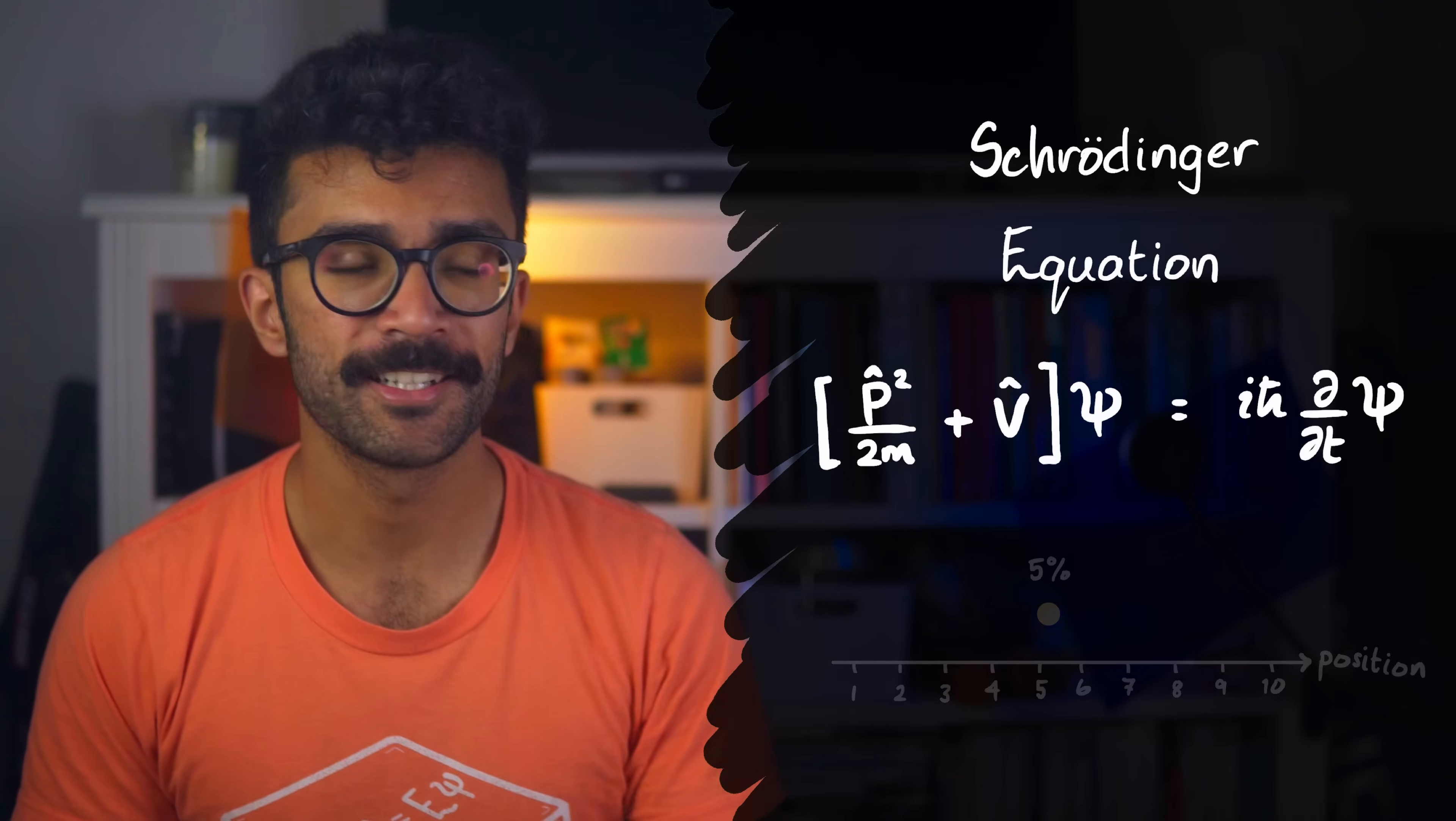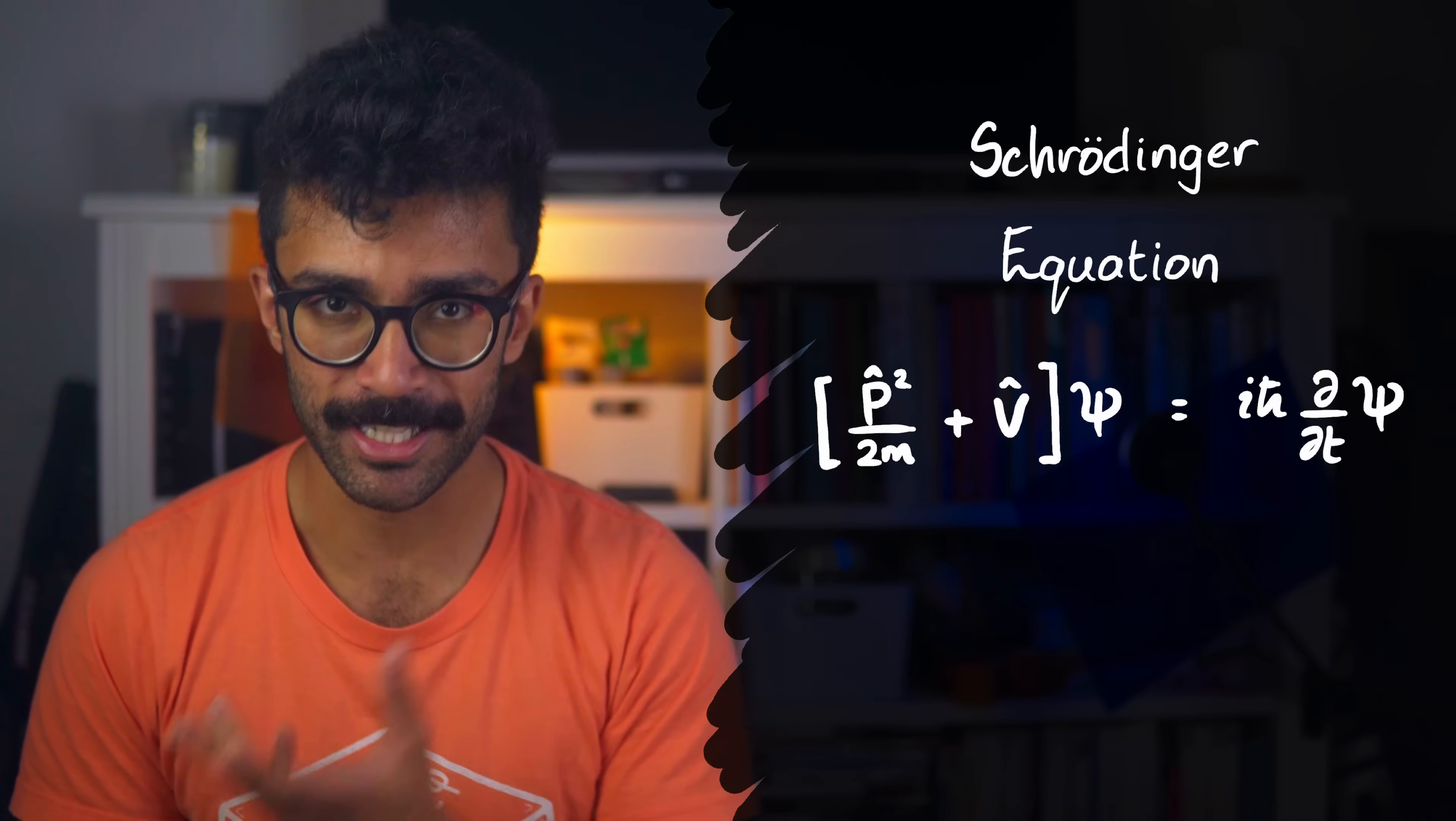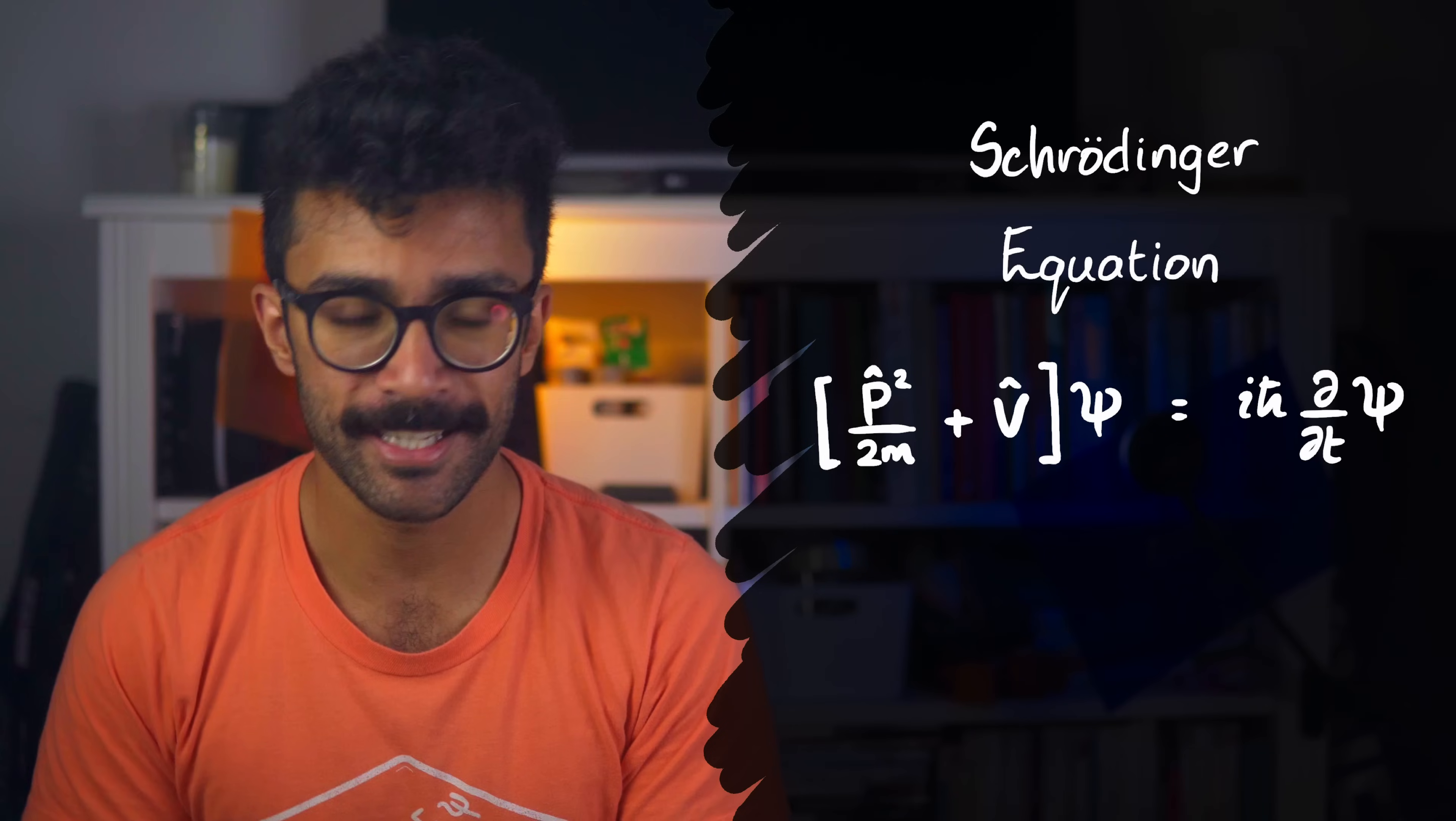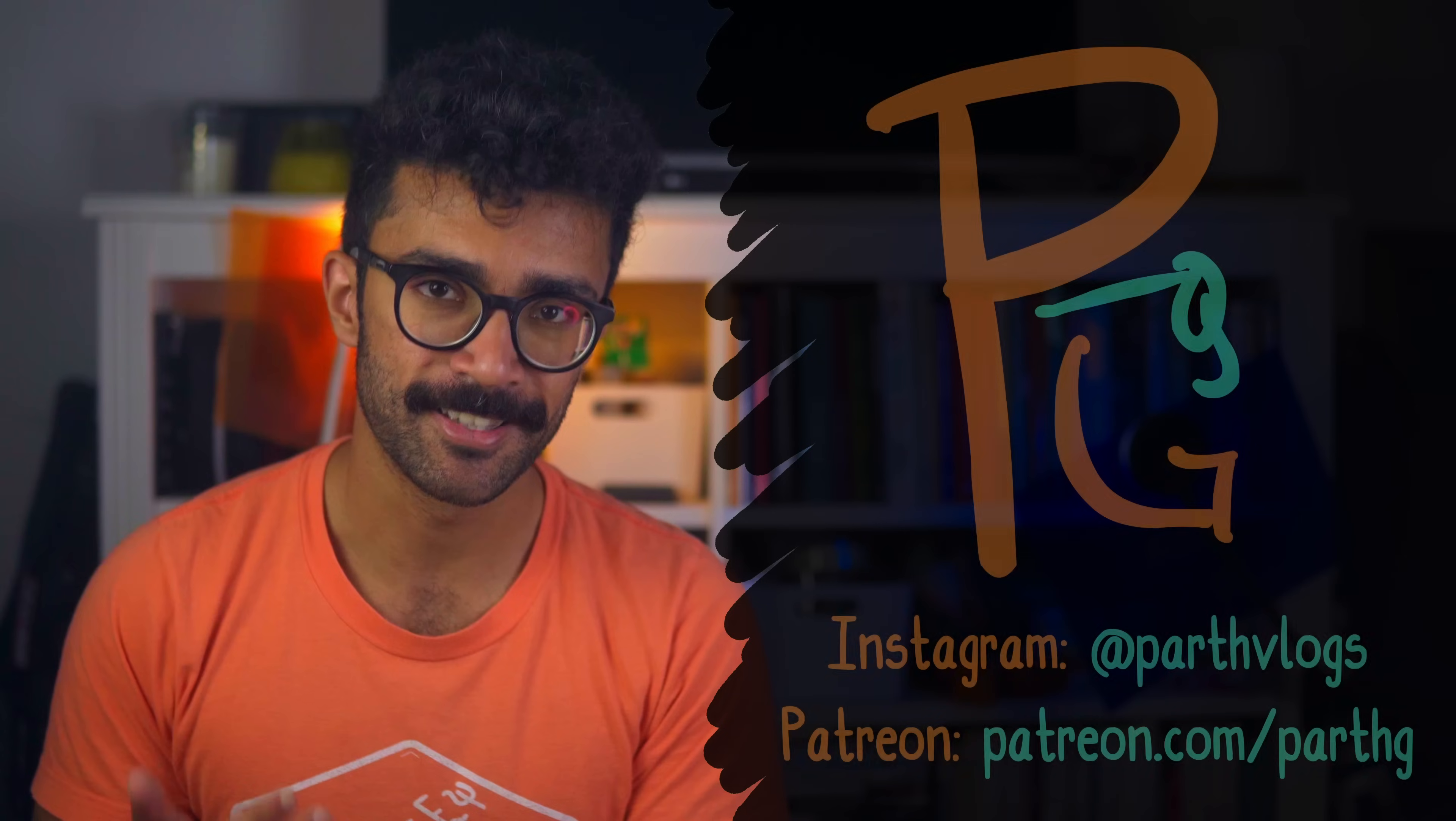Although it's an extremely versatile and useful equation, it's limited in that it doesn't take into account theories such as Einstein's special relativity. So in this video, we'll be looking at two upgraded equations that do incorporate other important physics theories, but as a result, are more complicated than the Schrödinger equation.